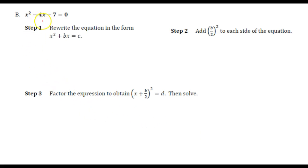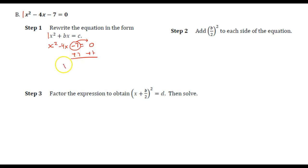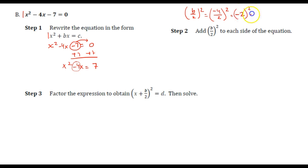Continuing along, the equation says to rewrite in that format. At least I have a leading coefficient of 1, so I don't have to worry about that. Let's move the negative 7 over — the opposite of negative 7 is positive 7 — so that gives x squared minus 4x equals positive 7. Our b value is negative 4. If I divide negative 4 by 2, that's negative 2, and if I square that, that's 4. I'll rewrite: x squared minus 4x plus 4 equals 7 plus 4.